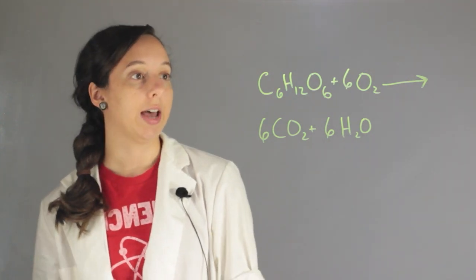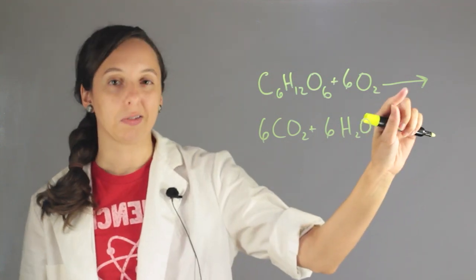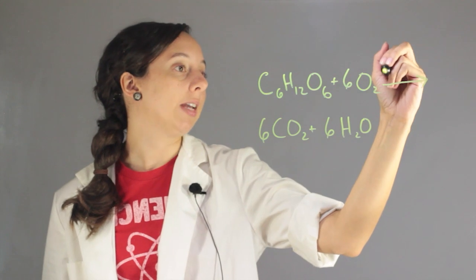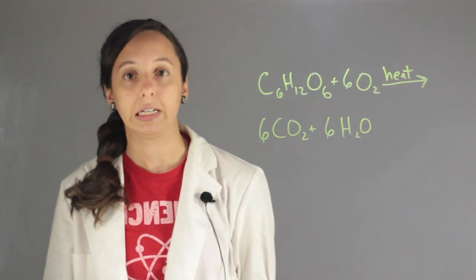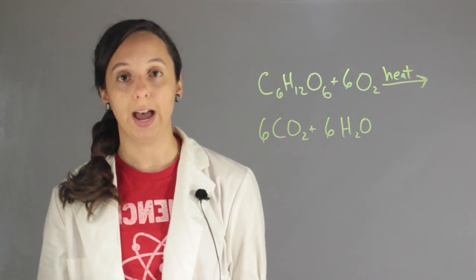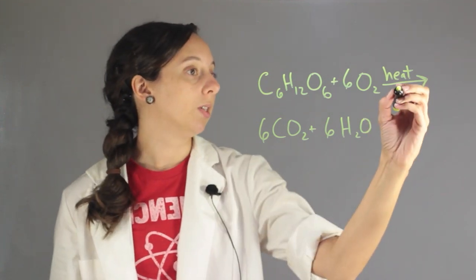So, if we're going to represent heat, we can do a couple of things. One, usually on top of the reaction arrow, we can just write heat, and that implies that you heated this in some way before the reaction happened. And another kind of quick way to do it that chemists like to use is a little triangle.